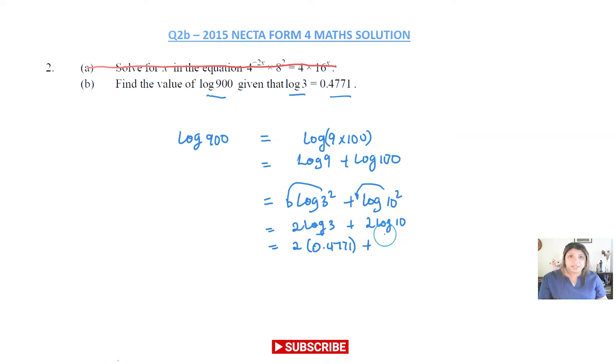Whenever you get log and you're not told what the base is, it means the base is 10. So log₁₀(10) = 1. That means we're going to do 2 × 1, which gives us 2.